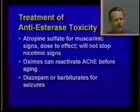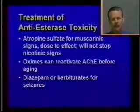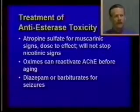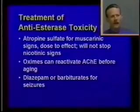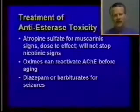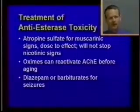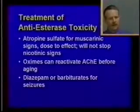To treat anticholinesterase toxicity, the most important step is to administer atropine sulfate to alleviate the muscarinic signs of poisoning, especially respiratory problems due to excessive secretions. Administer atropine sulfate and dose to effect — dose until the salivation and respiratory secretions dry up. It's important to remember that atropine sulfate is a muscarinic antagonist; it will only affect muscarinic signs and will not stop nicotinic signs such as muscle tremors.